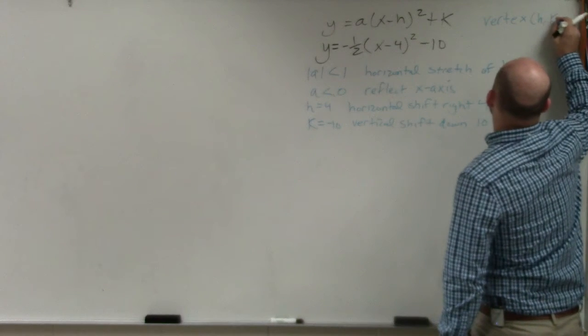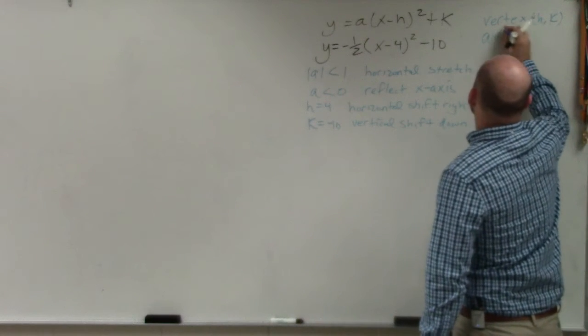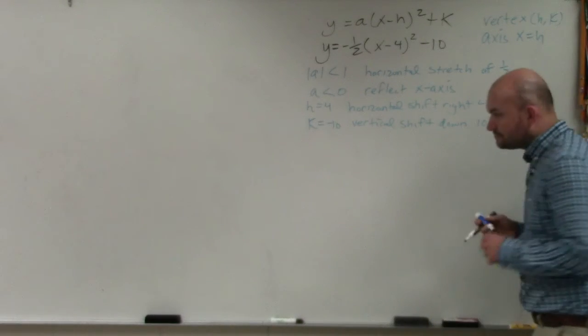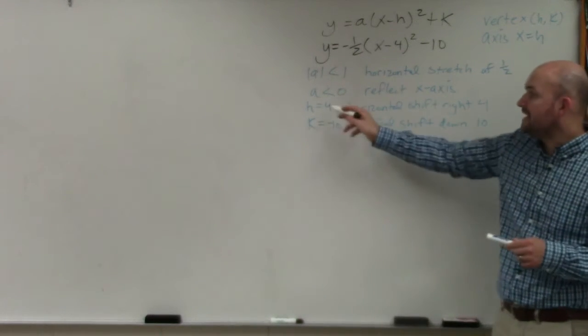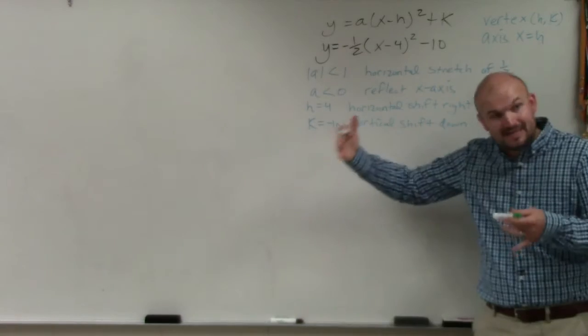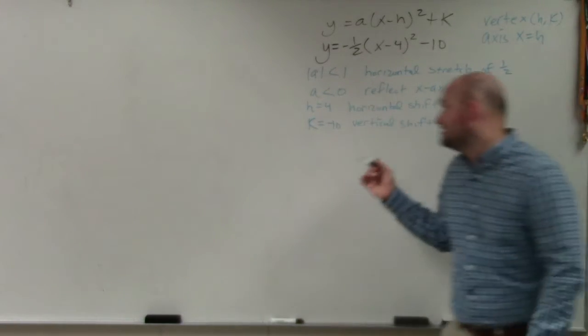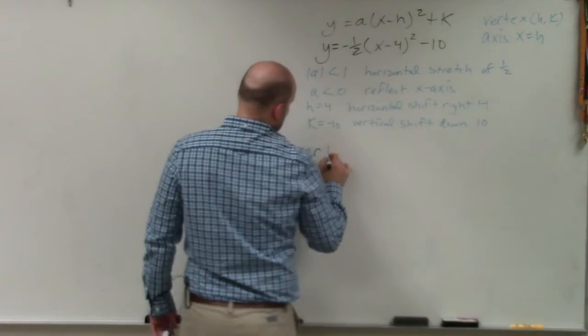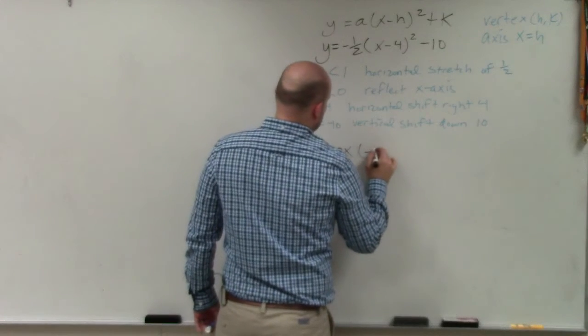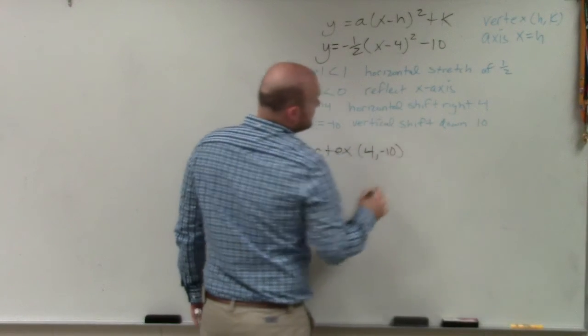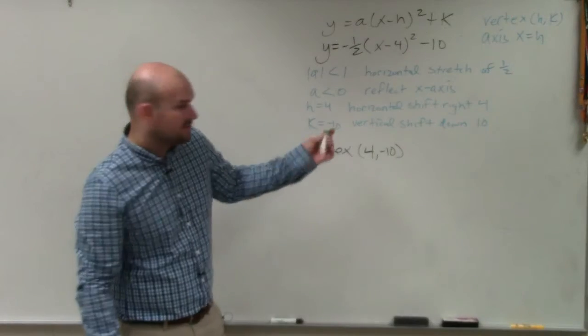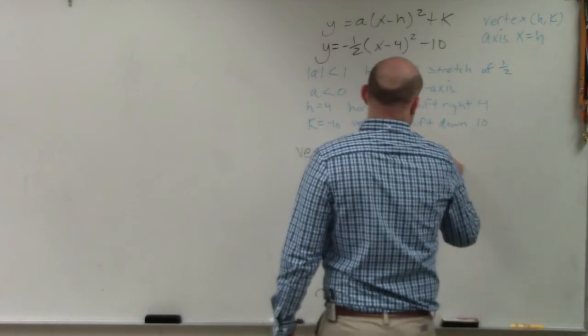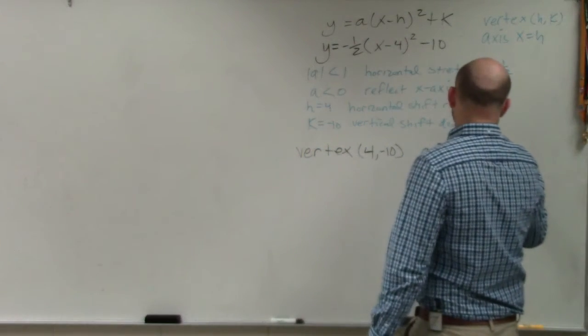Vertex, which is h, k. And our axis, which is x equals h. So in this case, we know that h is 4, because it's x minus h. So h is 4, k is negative 10. So I'll write my vertex is positive 4, comma negative 10. The axis of symmetry is x equals h. So axis is x equals 4.